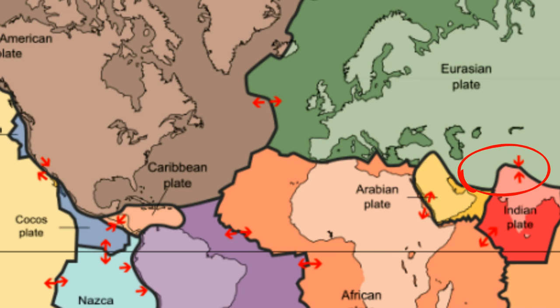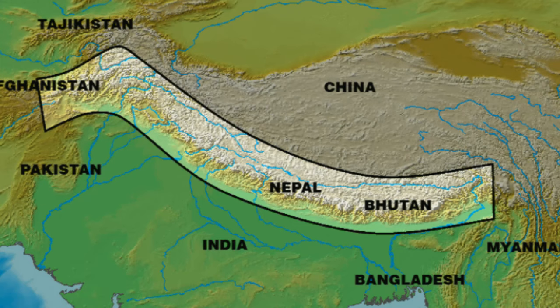An example is the Indian plate colliding with the Eurasian plate and creating the Himalayan mountain range.